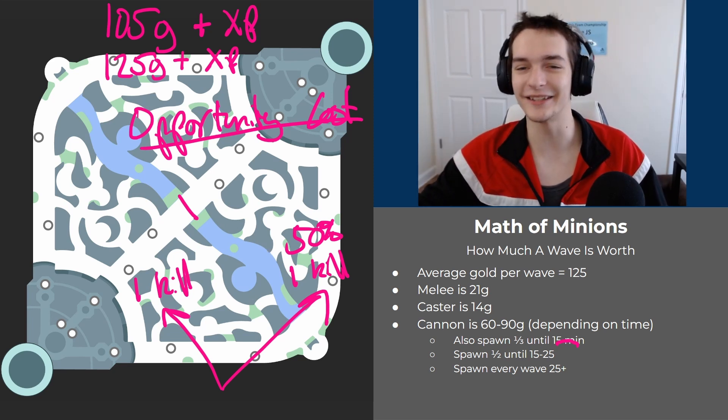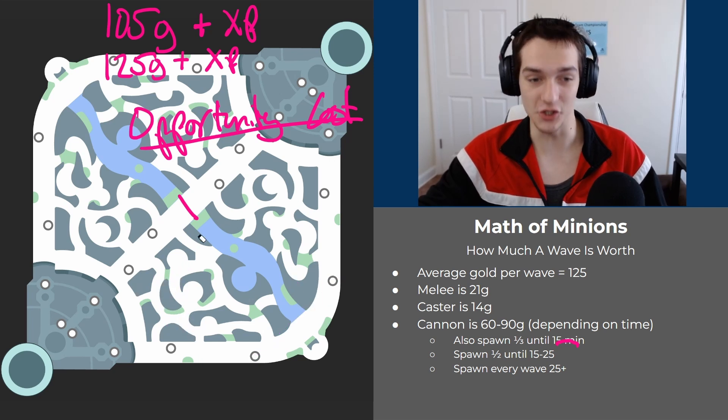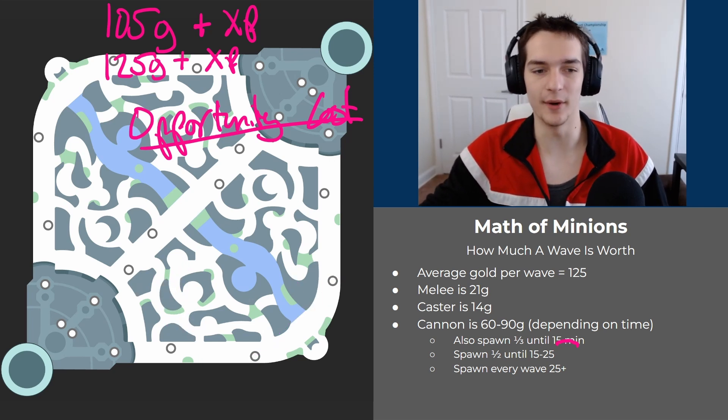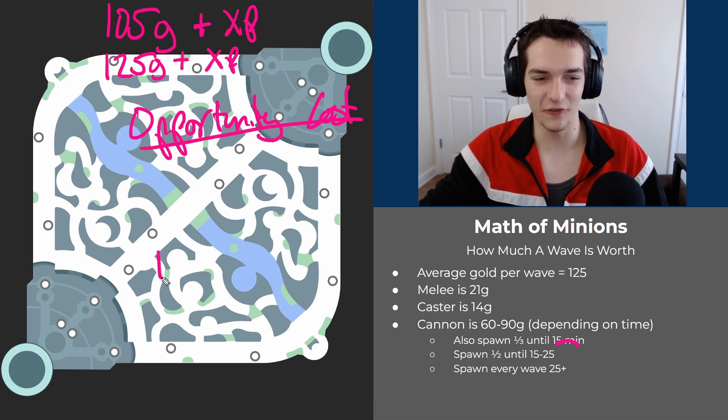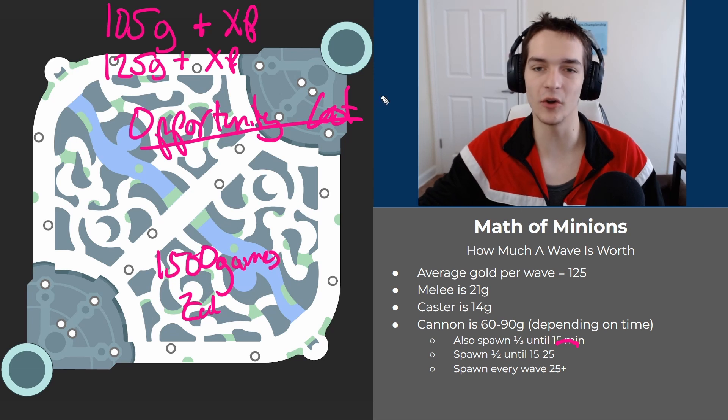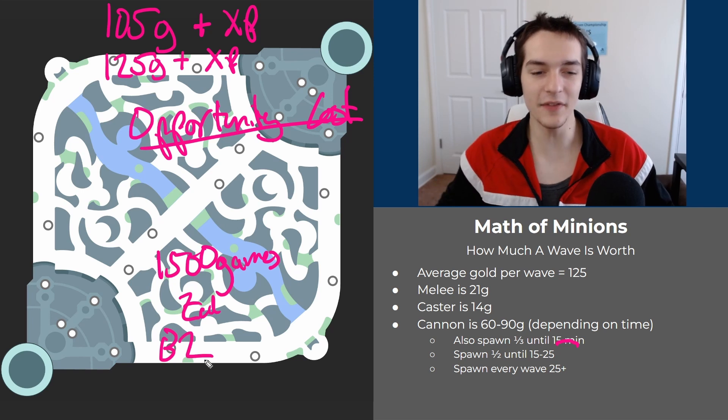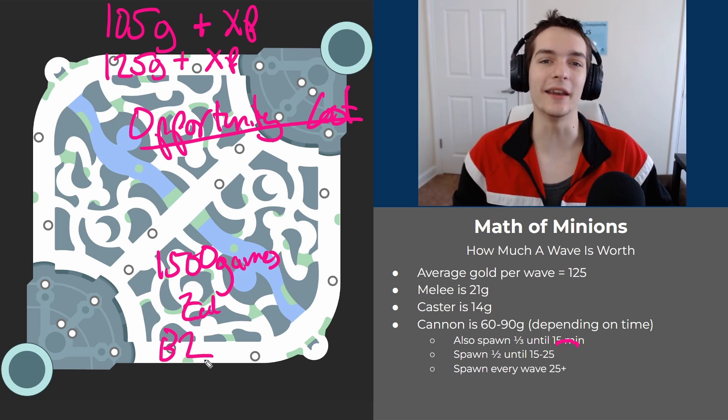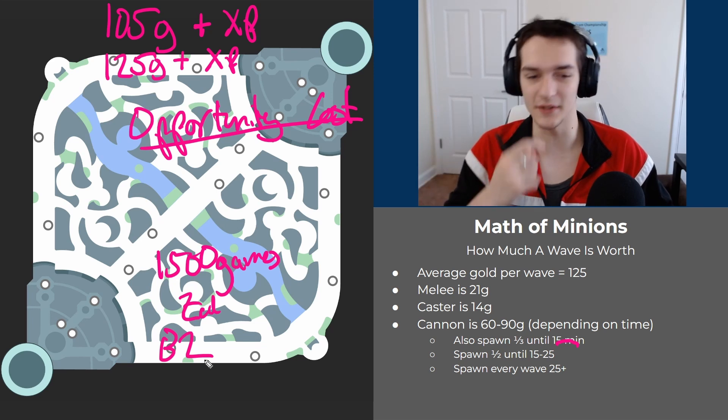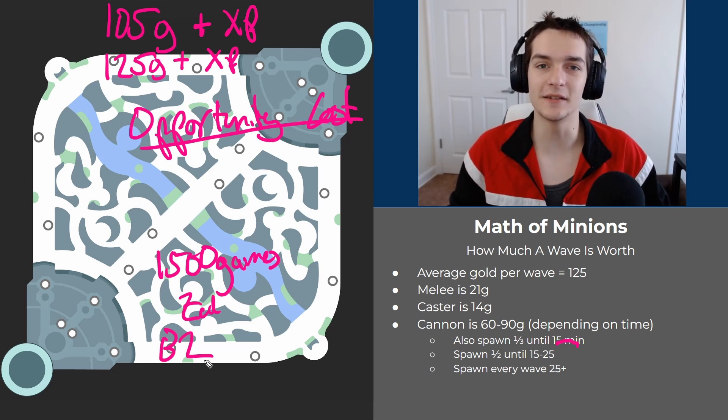I'm gonna tell a story. I once was smurfing on a bronze account and found this Zed player with 1500 games, all on Zed. He was bronze two. This guy had better mechanics than some silver and gold players I coach in terms of landing his Qs, but he was bronze two. How does that make sense?